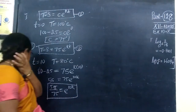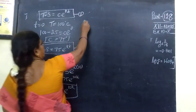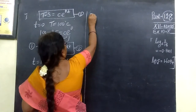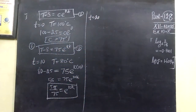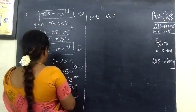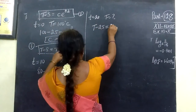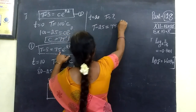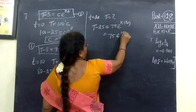So 55 equals 75·e^(10k). Therefore e^(10k) equals 55 by 75. This is the key value. We will use this value. Next, for t equals 20 minutes, we substitute: T minus S equals 75·e^(kt) equals 75·e^(k·20), which equals 75·(e^(10k))^2.